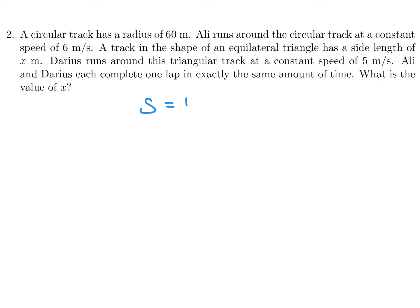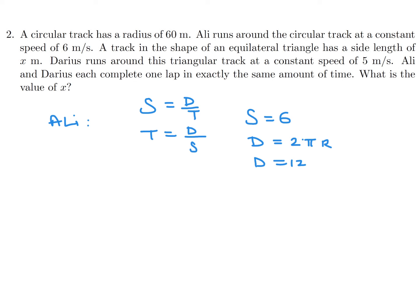Speed equals distance over time, or time equals distance over speed. For Ali, speed is 6, and the distance is the circumference of the circle, which is 2 pi r. With radius 60, that's 120 pi. So the time will be 120 pi over 6, which is 20 pi.